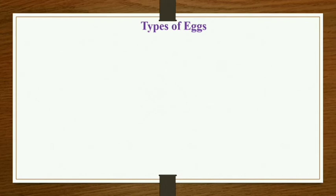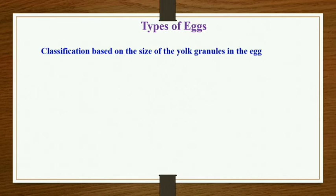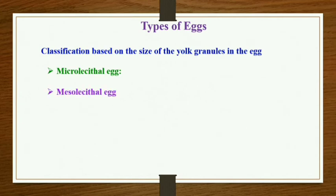Moving on to the next basis of classification, which is the size of the yolk granule. On this basis, the eggs are categorized into three categories: microlecithal eggs, mesolecithal eggs, and macrolecithal or megalecithal eggs.